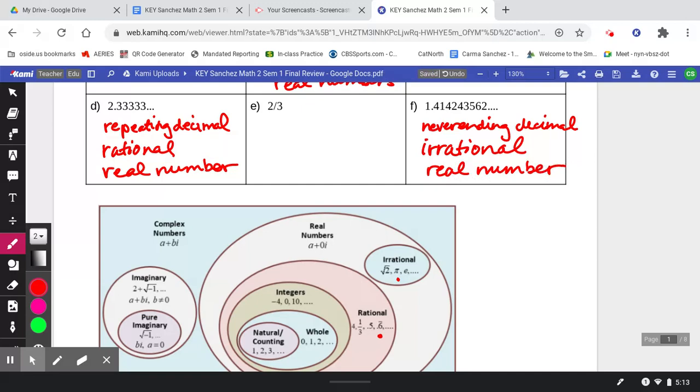Okay, finally, we just have a fraction of 2/3. Notice within this system diagram where 2/3 might fall right here under rational. So fractions fall under rational numbers. They are considered real numbers.